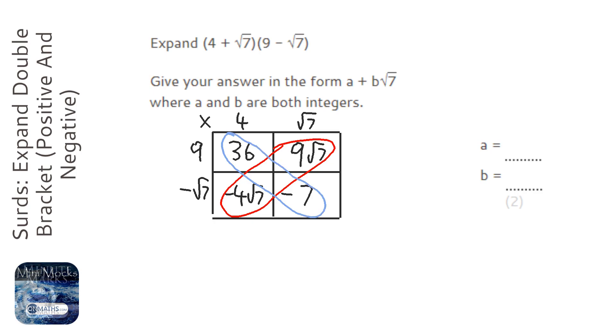36 take away 7 is going to be 29. And 9 root 7 take away 4 root 7 is going to be plus 5 root 7.